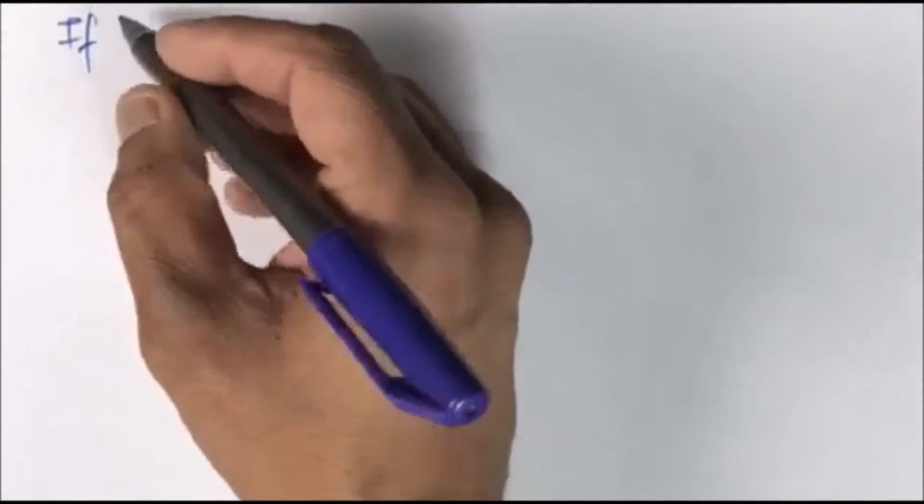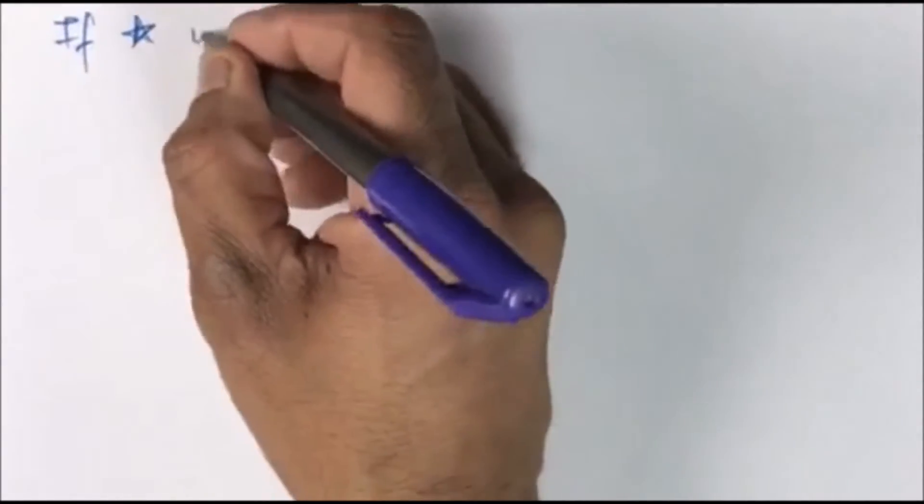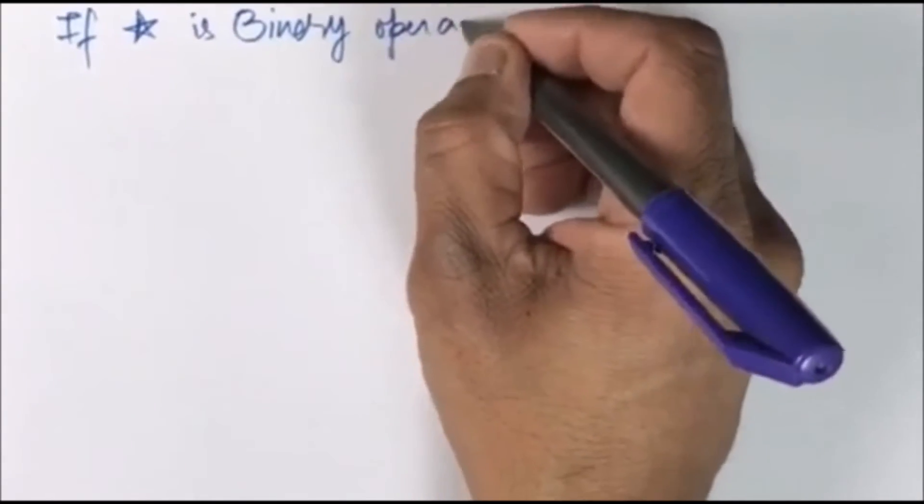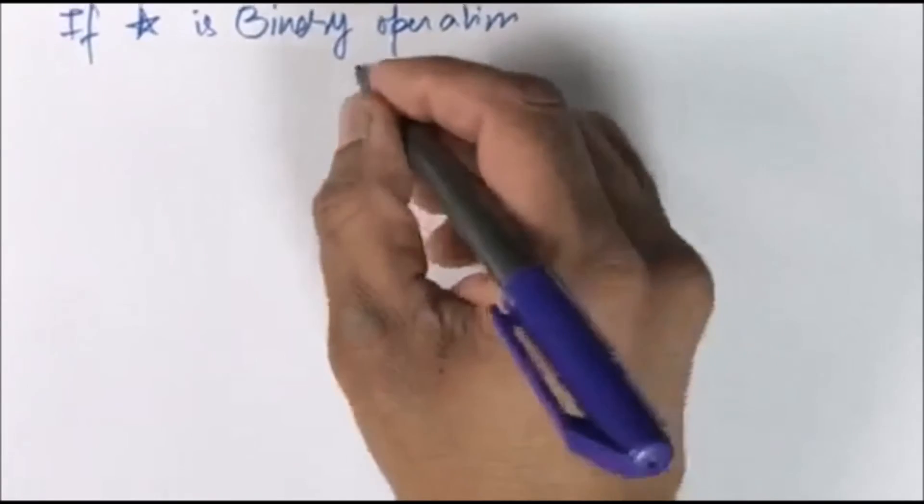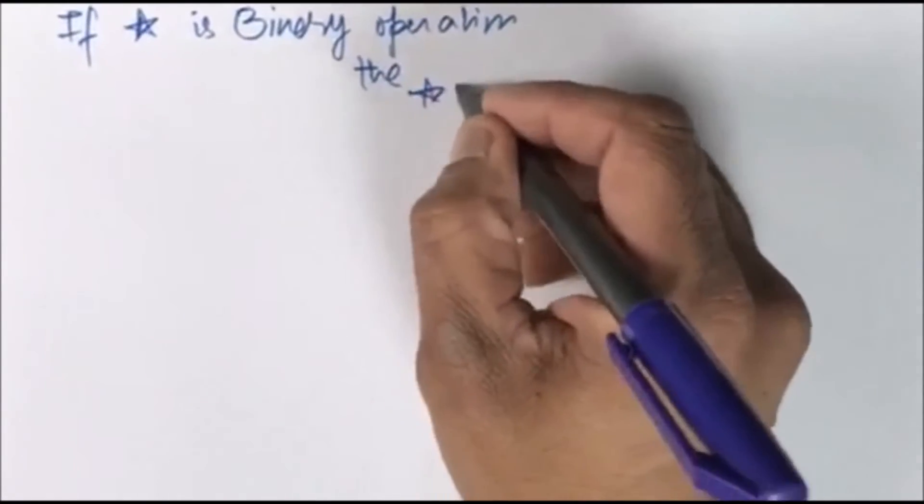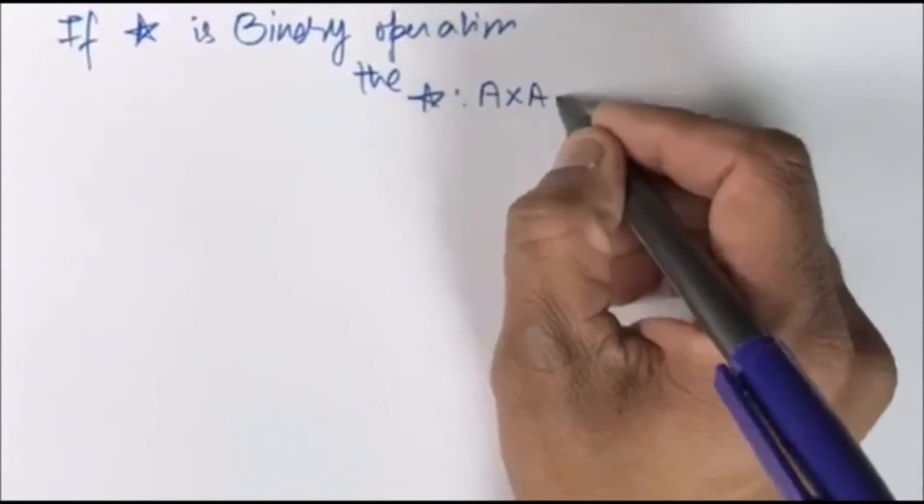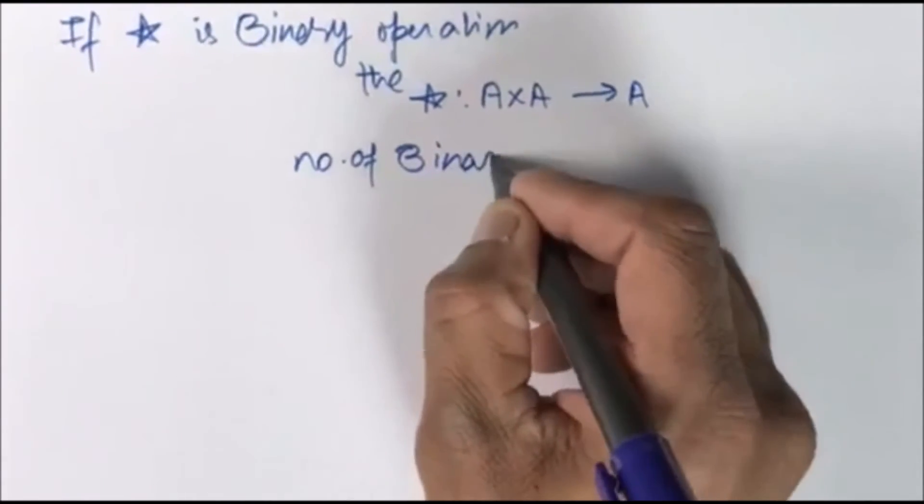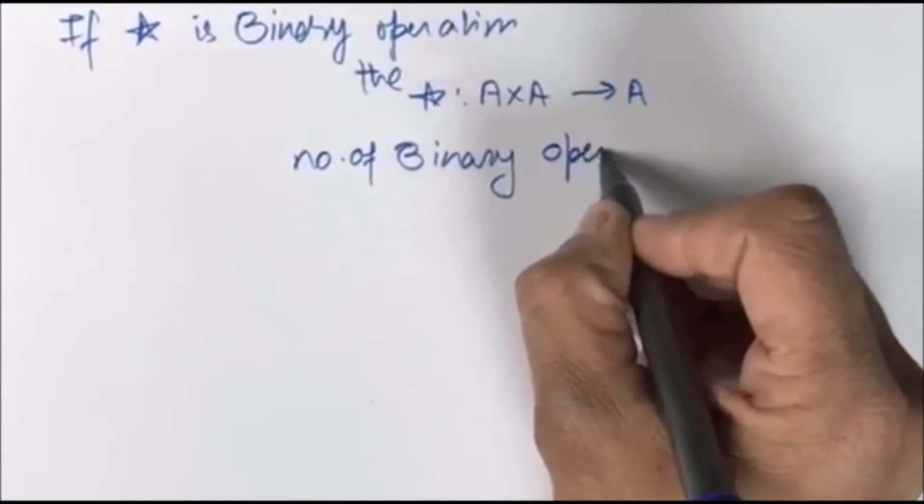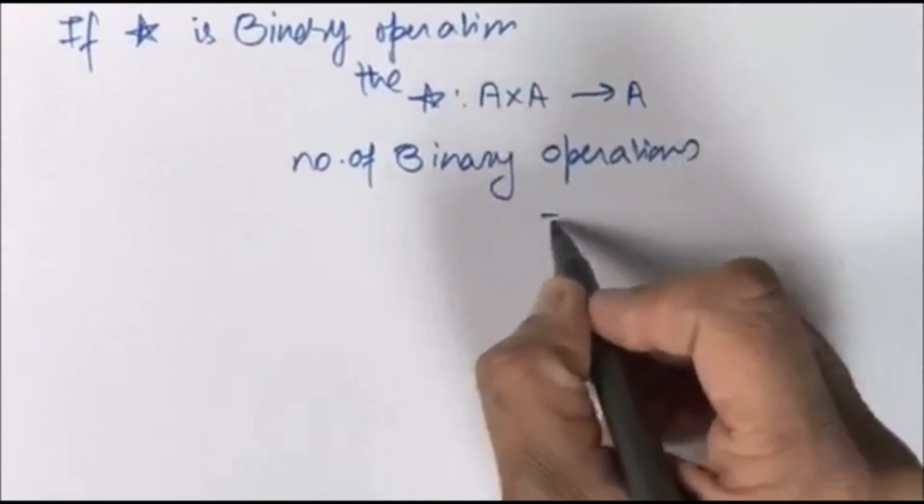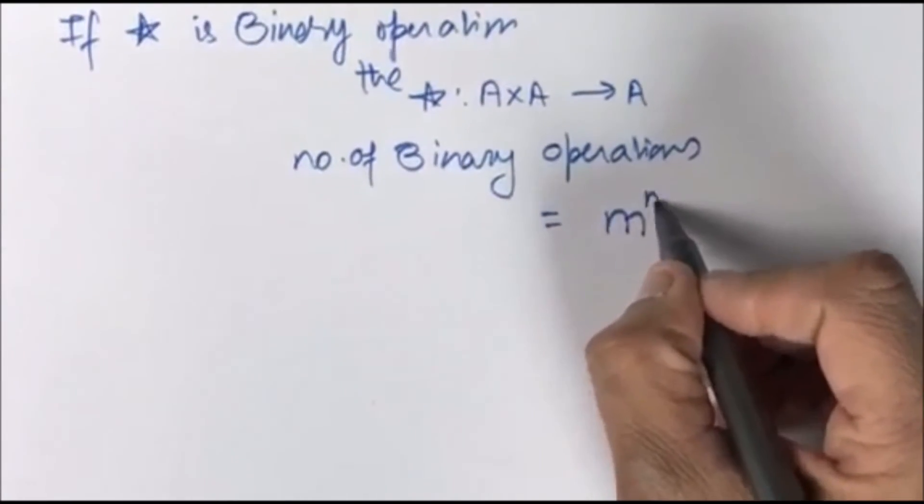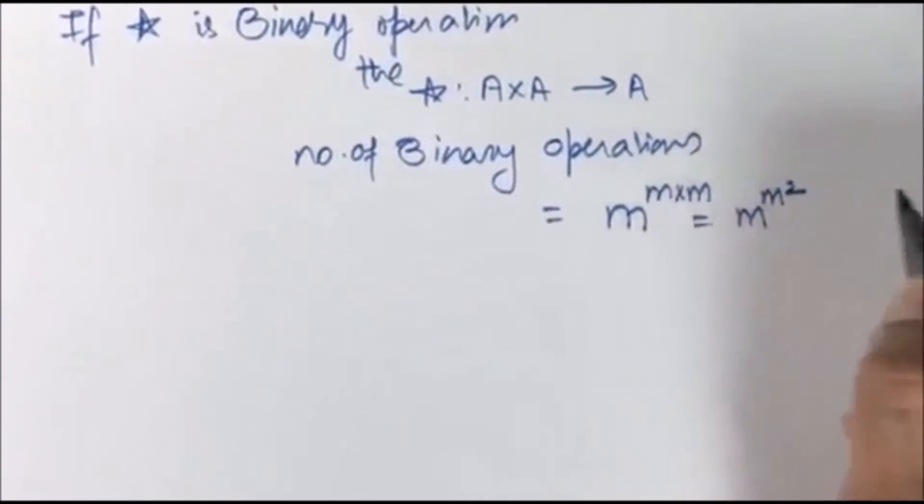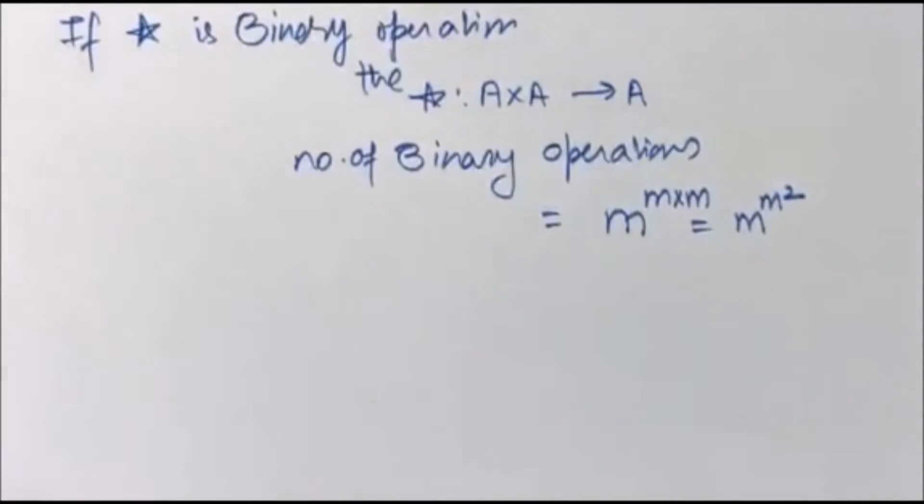If star is a binary operation, then star is defined from A cross A to A. The number of binary operations equals M to the power M cross M, that is M to the power M square. This was for your quick revision.